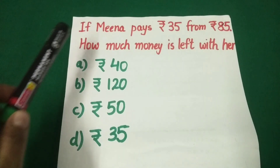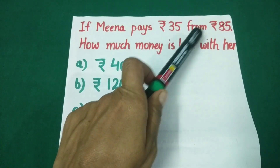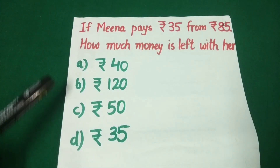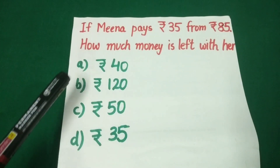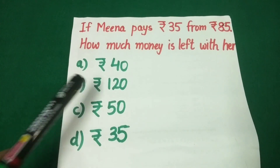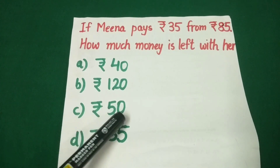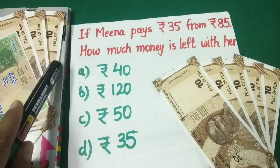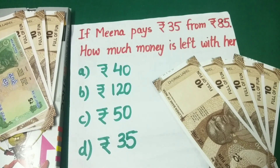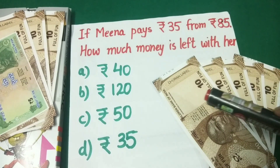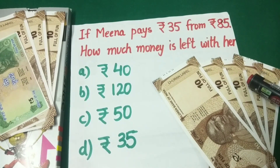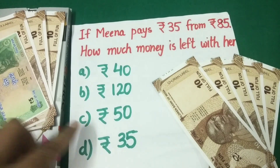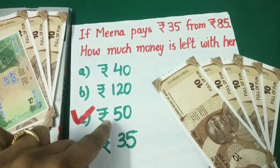Students, today's sum is: if Meena pays 35 rupees from 85 rupees, how much money is left with her? Four options are given here. Option A is 40 rupees, Option B is 120 rupees, Option C is 50 rupees, and Option D is 35 rupees. After paying 35 rupees from 85 rupees, Meena is left with 10, 20, 30, 40, 50 rupees. So our correct option is Option C, 50 rupees.